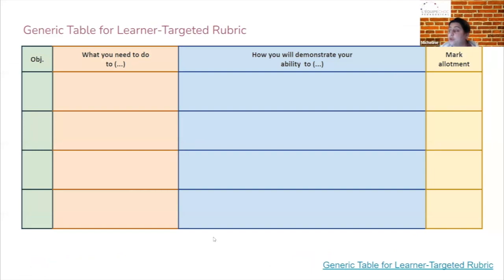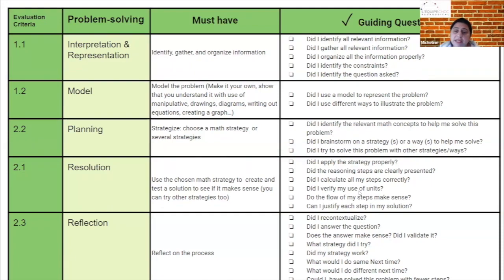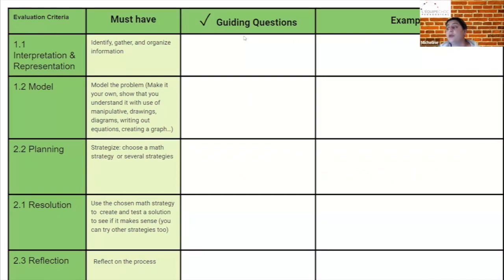Here are two tools for you to play with. One is a generic learner target rubric table — list what you need to do and how you'll demonstrate it, using words the student understands, not fancy words. Simplifying things — Einstein said something like: it's not how complex something is, it's how easily you can explain it that makes you a genius. Another model is a problem-solving format with guiding questions. You could also give students questions to reflect on and ask them to write their own questions from the process.